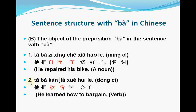Let's see the next sentence: 她把砍价学会了. 砍价 is a verb meaning bargain, or how to bargain. 把 means make or have. 学会 means learned. The verb in this sentence serves as the object of 把. But sometimes a verb is also possible as the object.